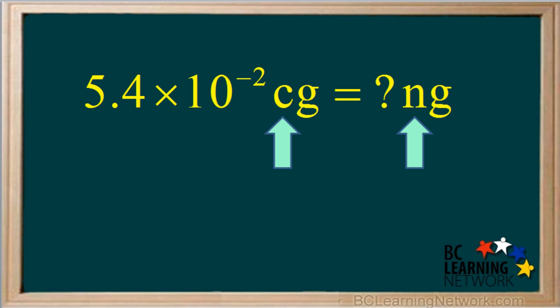In this example, both of the units have a prefix. Conversions like this we do in two steps. Both centigrams and nanograms have grams in common. We call grams the base unit. In the first step, we convert centigrams to grams. And in the second step, we convert grams into nanograms. We can do both conversions in one equation.